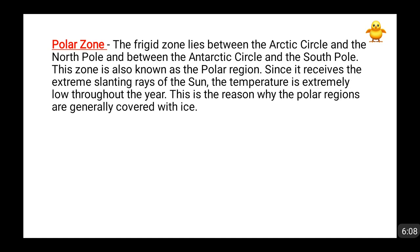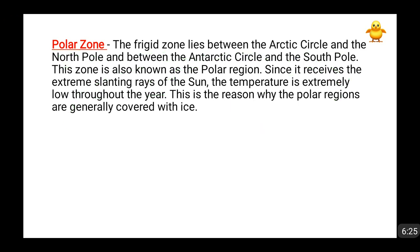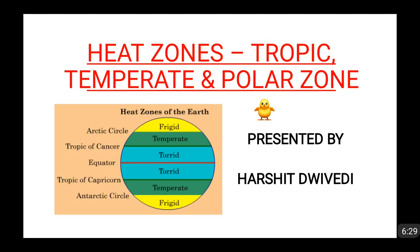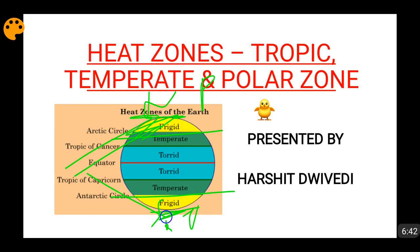Moving forward to the polar zone — the polar zone, also known as the frigid zone, lies between the arctic circle and the North Pole, and between the antarctic circle and the South Pole. It is called the polar zone because it receives extreme slanting of the rays of the sun, and the temperature is extremely low, which is why these areas are almost covered with ice. The sun rays reach after a comparatively long time with respect to the torrid and temperate zones, with extreme slanting, resulting in less heat reaching these areas.